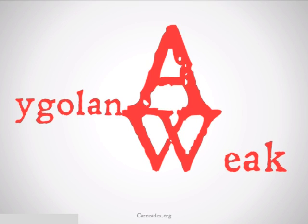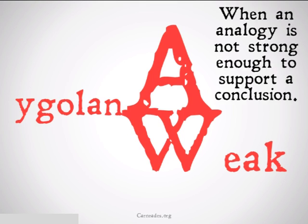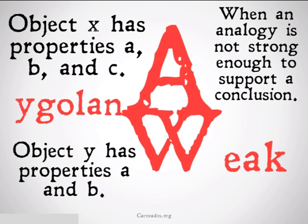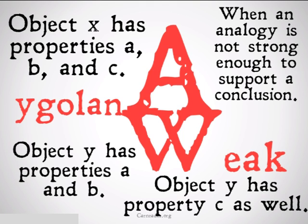Weak analogy is basically a fallacy when an analogy is not strong enough to support a conclusion. Generally, it's formulated as follows: Object X has properties A, B, and C. Object Y has properties A and B. Therefore, object Y has property C as well.